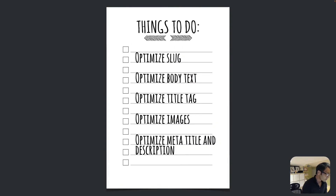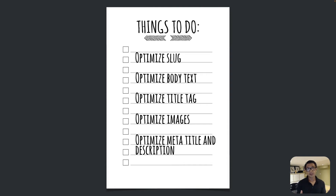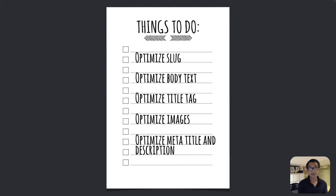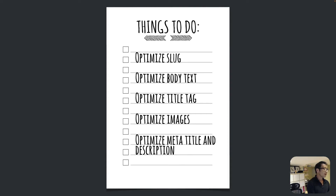Especially for non-profit organizations, lots of people don't really know how to optimize web content. There are lots of things we could talk about, but I picked five things you can actually implement — so you don't have to wait weeks or months. You can implement these easily, like today or tomorrow. Let's talk about this. The first thing is optimizing the slug.